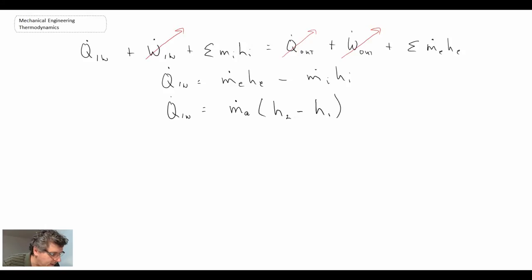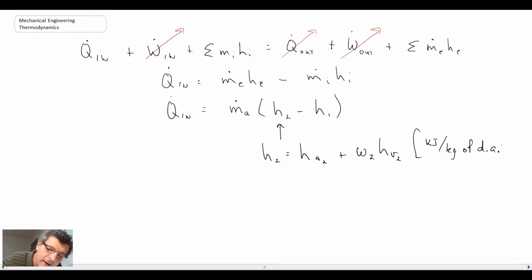H2 would be the exit state, H1 is the inlet. And to give you an example, let's say we want to evaluate enthalpy at state 2. We have two options there. We either use the equations and remember that is kilojoules per kilogram of dry air. And that is why I was able to use the mass flow rate of dry air there.